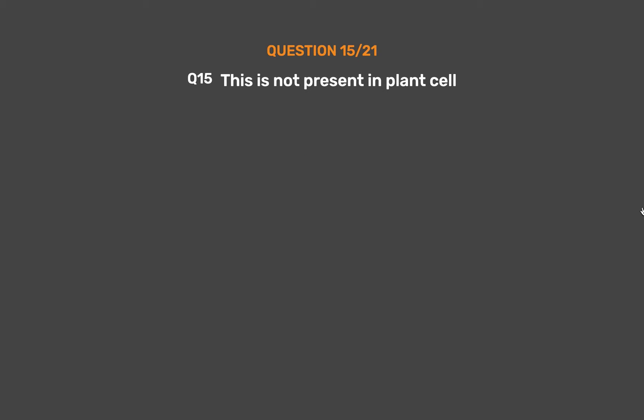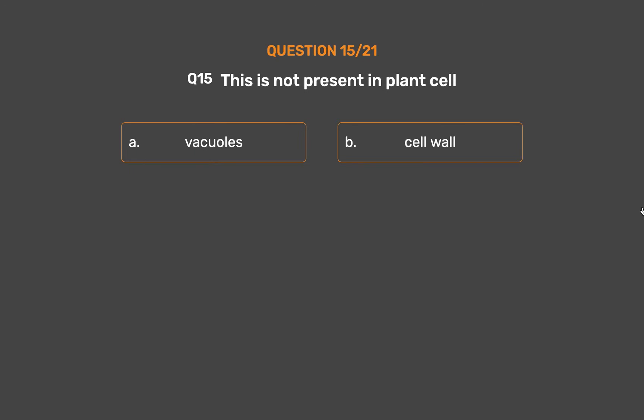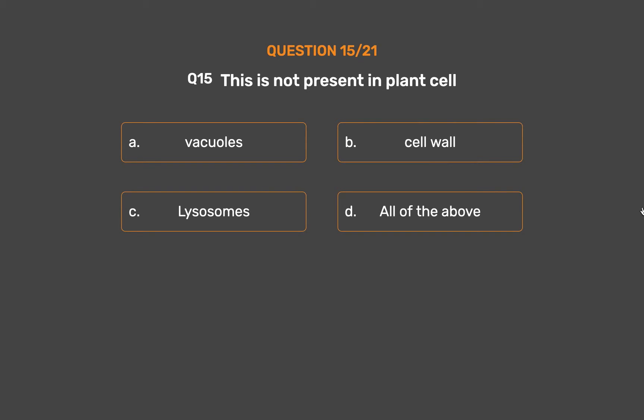Question No. 15: This is not present in plant cell. Option A: Vacuoles. Option B: Cell wall. Option C: Lysosomes. Option D: All of the above.